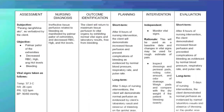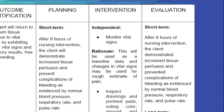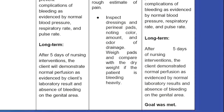For our evaluation: short-term — after eight hours of nursing interventions, the client demonstrated increased tissue perfusion and prevented complications of bleeding as evidenced by normal blood pressure, respiratory rate, and pulse rate. Long-term — after five days of nursing interventions, the client demonstrated normal perfusion as evidenced by normal laboratory results and absence of bleeding on the genital area.